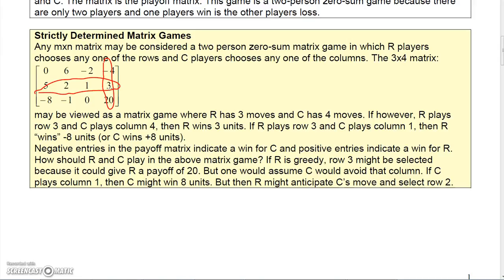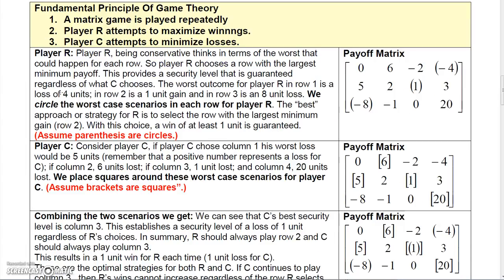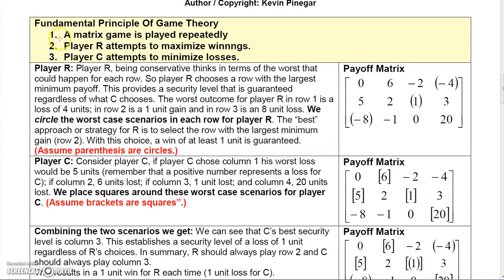If R chose row three and C chose column one, R loses eight, which means C gains eight. We want to find the optimal strategy for both players. The fundamental theorem of game theory states that in a repeatedly played matrix game, player R attempts to maximize winnings while player C attempts to minimize losses.